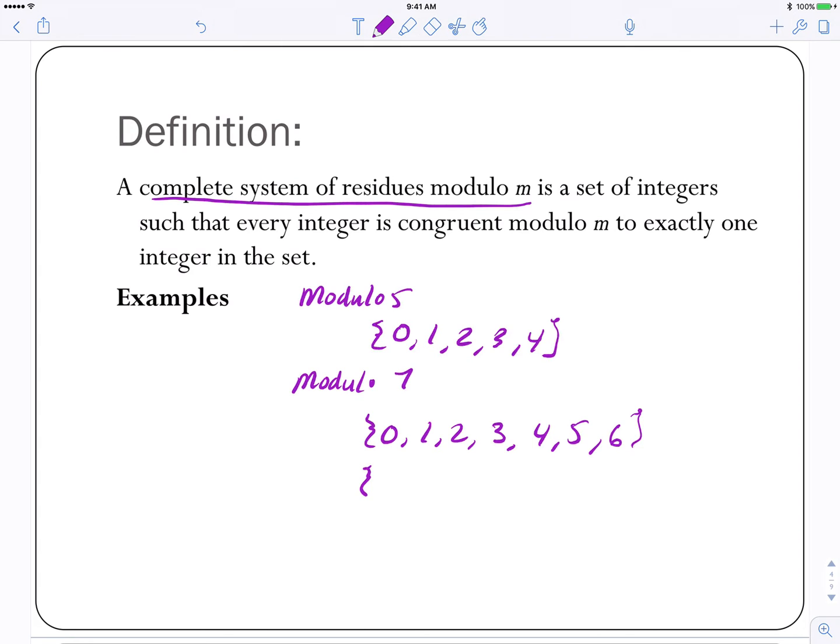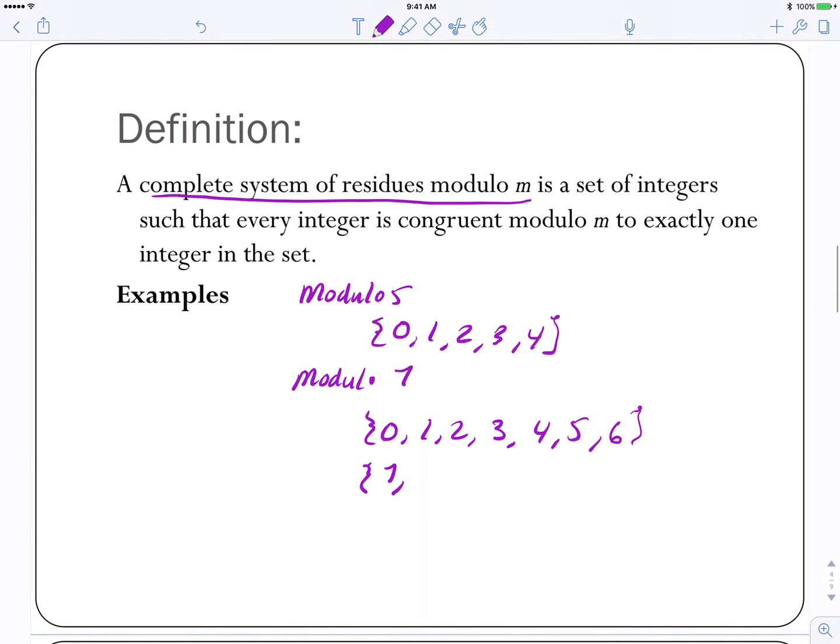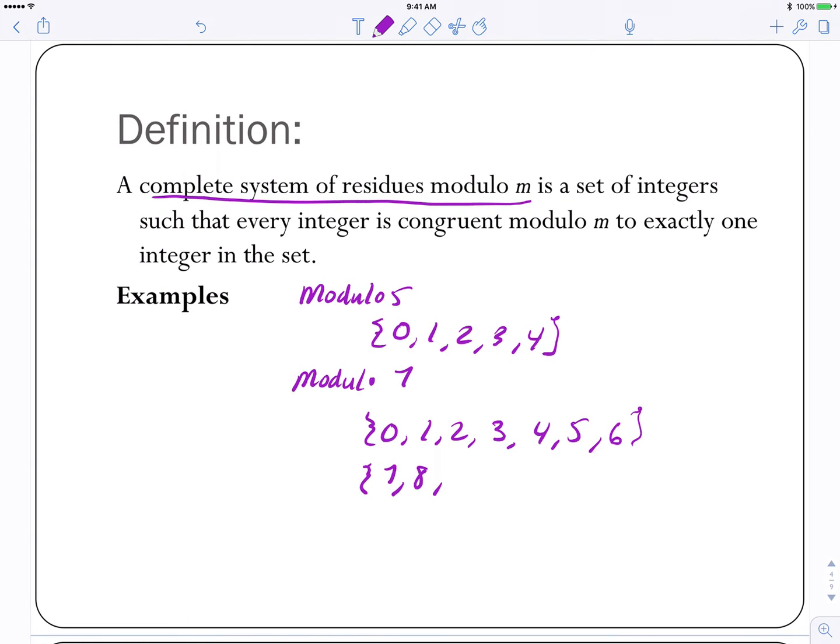So for 0, I could put any multiple of 7. I could have 7. For 1, I could have 1 or 1 plus or minus any multiple of 7. So for example, 8. You know, I could add 14 to 2 and it doesn't change its value mod 7. So I could have a 16 here. And similarly, I could add multiples of 7 to each one of these. We'll see some examples like that later.